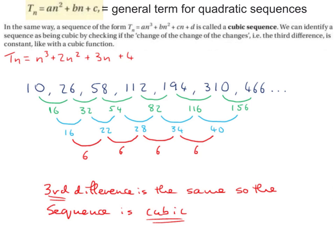Now I'm going to have a look at the third difference. The difference between 16 and 22 is 6. Between 22 and 28 is 6. Between 28 and 34 is 6. Between 34 and 40 is 6. I can see that the third difference is the same. The third difference is 6. So the sequence is cubic.